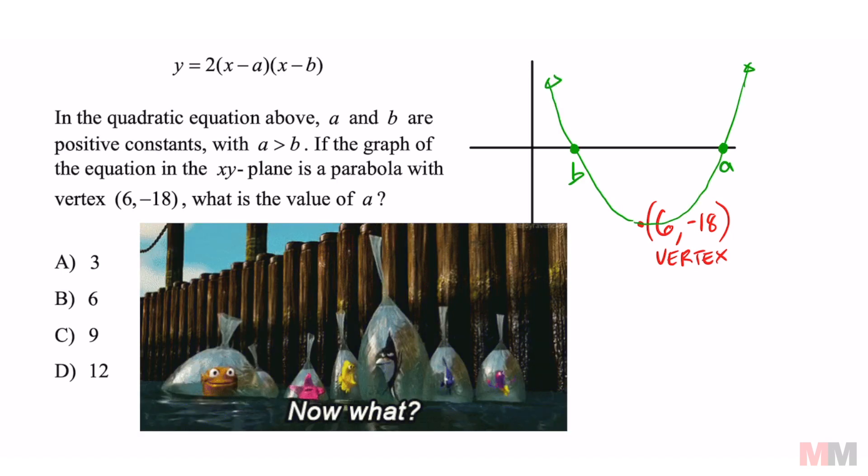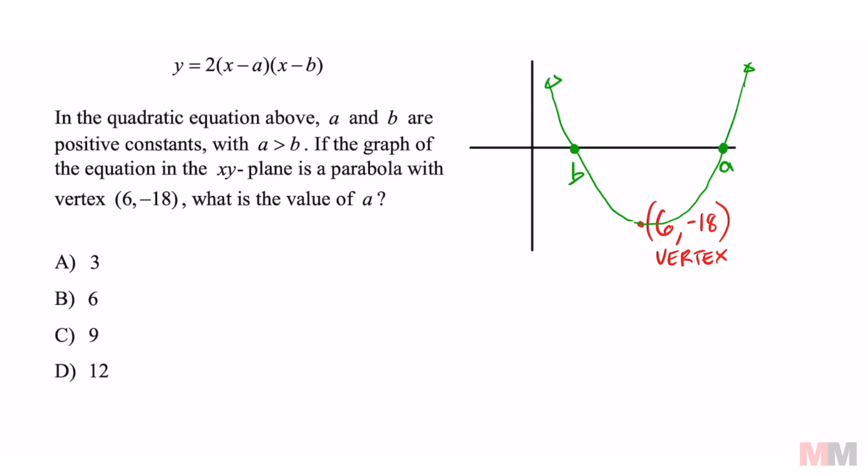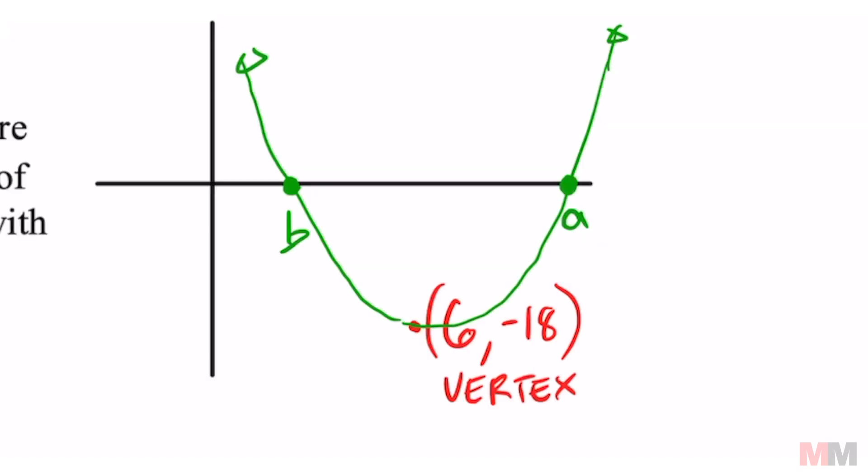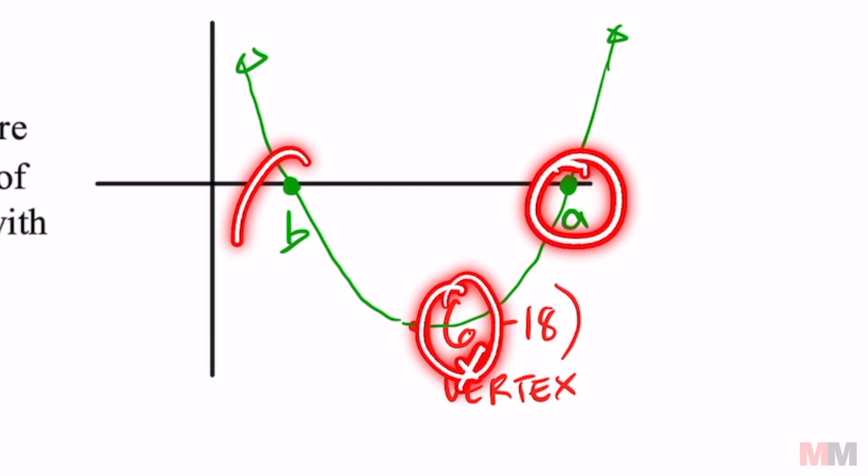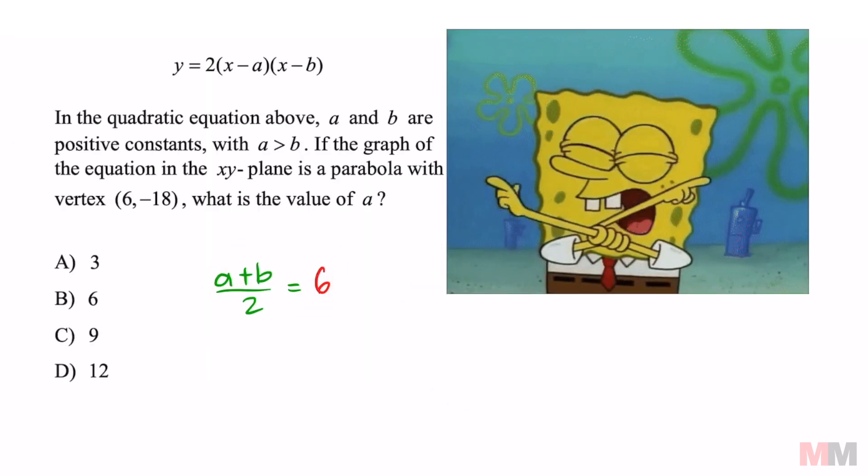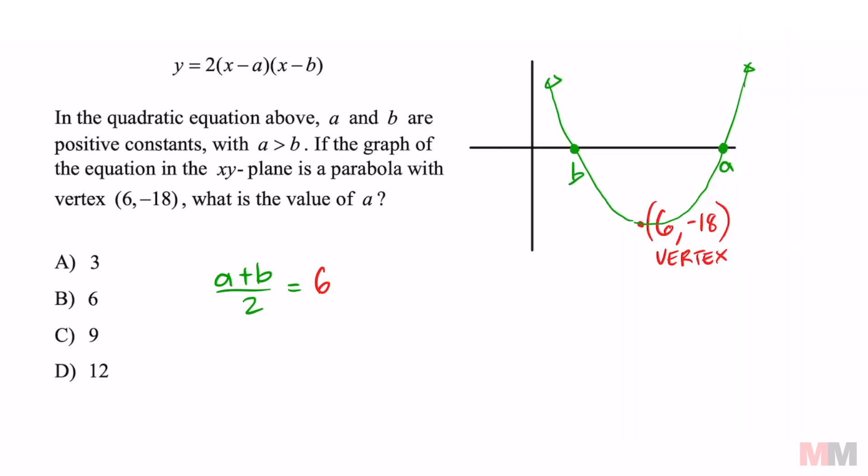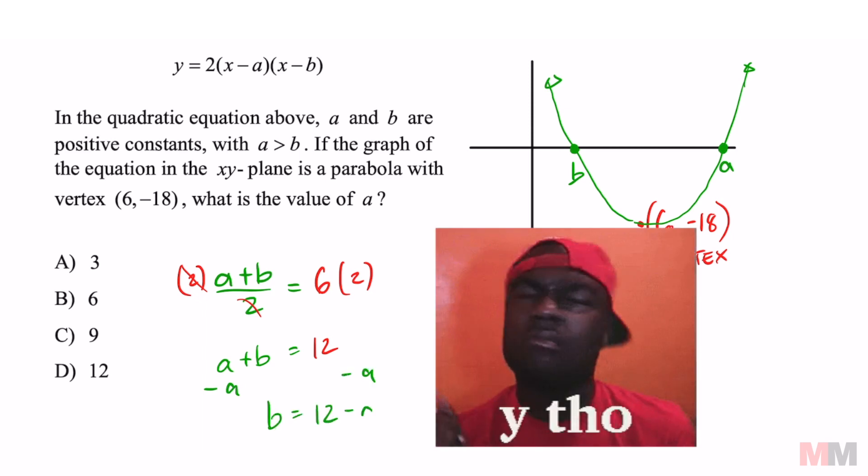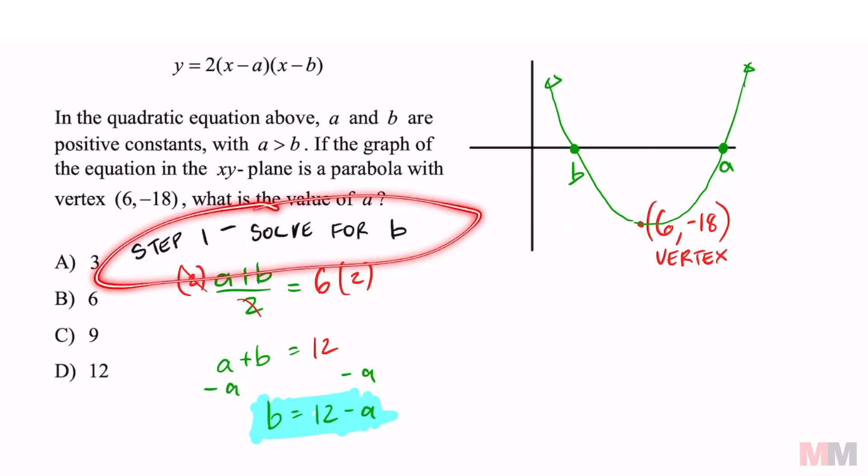The first thing we're going to do is set up an equation where we can state that (a + b)/2 is going to equal 6. And that is because 6, which is an x value, is going to be in the middle of a and b. So this is basically just the midpoint formula. Go ahead and solve that equation for b by multiplying by 2 and subtracting an a on both sides. So now I got b = 12 - a. You're going to need that information on the second part of the problem. So our step one was just to solve for b.